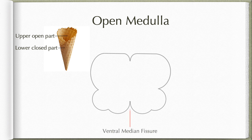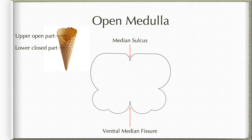We see the anterior median fissure or the ventral median fissure along the midline ventrally, and on the dorsal aspect we see the median sulcus. Please do not confuse this with the dorsal median sulcus seen in the midline in the lower closed part. As we are seeing in this ice cream cone shown on the left side, we are now in the upper open part, seeing the posterior surface of the ventricular cavity. The median sulcus shown here is at a different plane than the posterior median sulcus of the lower closed part.